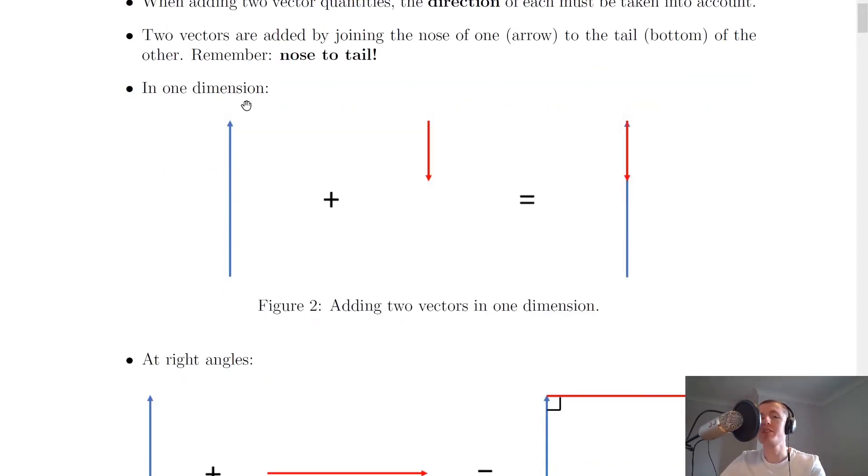So if we're adding two vectors in one dimension, this is the easiest example of what you could get. Let's say we had a vector of this length pointing in this direction, and we added it to a vector of this length pointing in the opposite direction. Then if we combine those together and add them, you'll see that I've joined them nose to tail here. I've joined the tail of this one to the nose of this one, and it looks like this, overlapping.